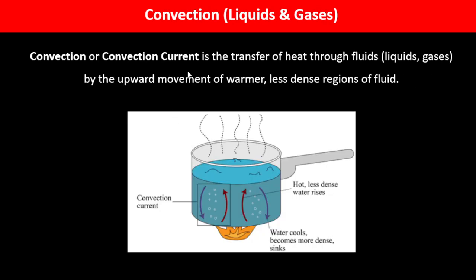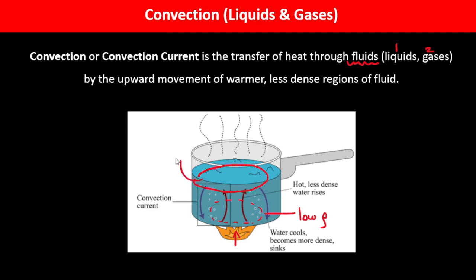Convection, or convection current, is the transfer of heat through fluids — both liquids and gases — by the upward movement of warmer, less dense regions. When heat is applied, particles near the heat source gain energy and spread away from each other, so the lower part of the liquid becomes less dense. The water above, which is the cooler region, has higher density.